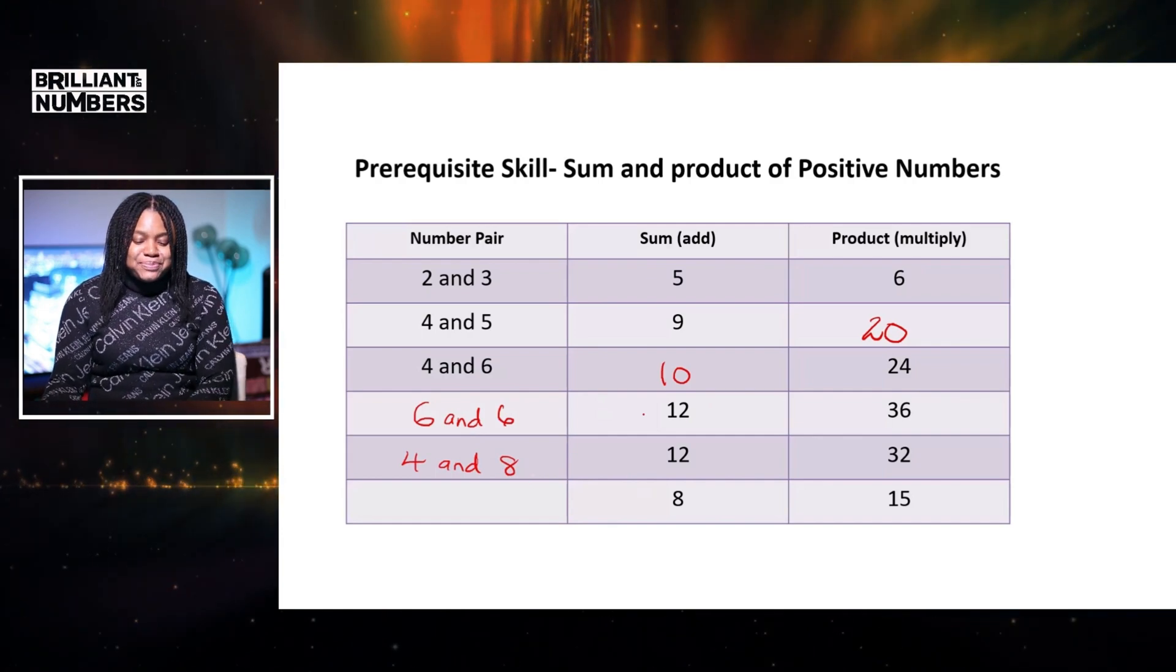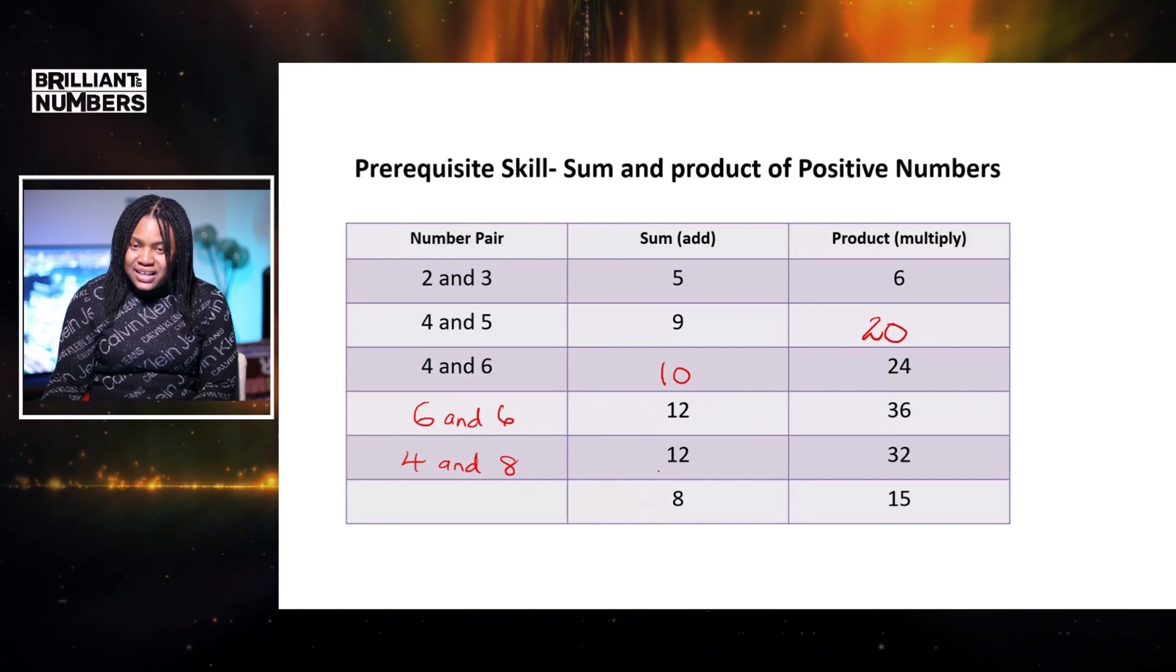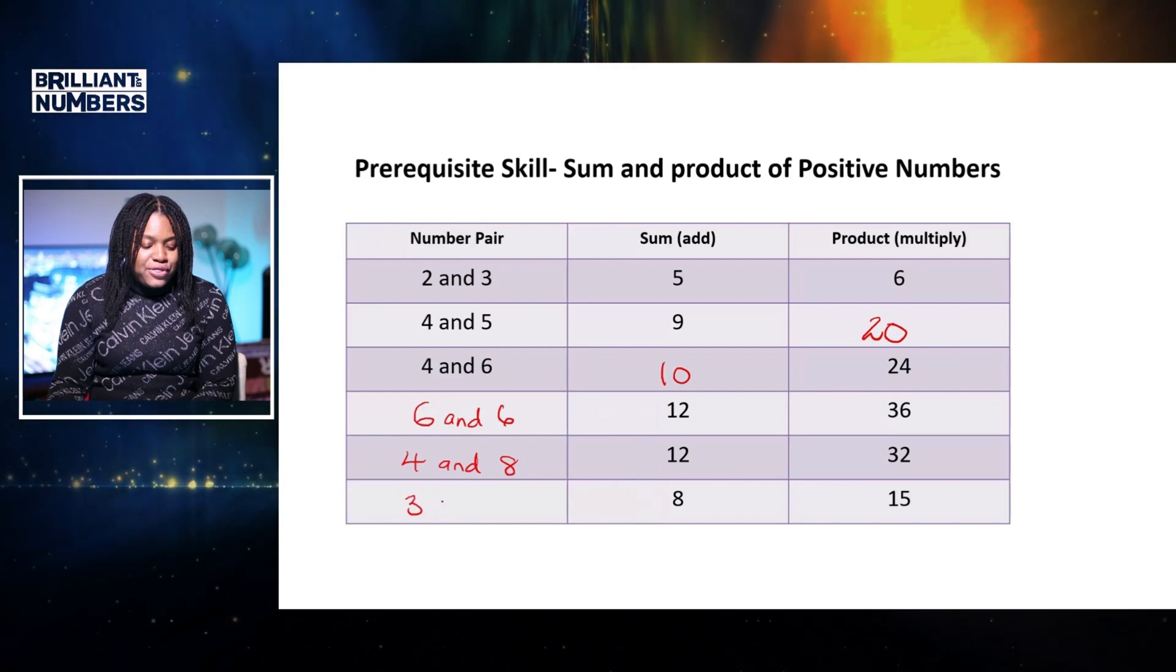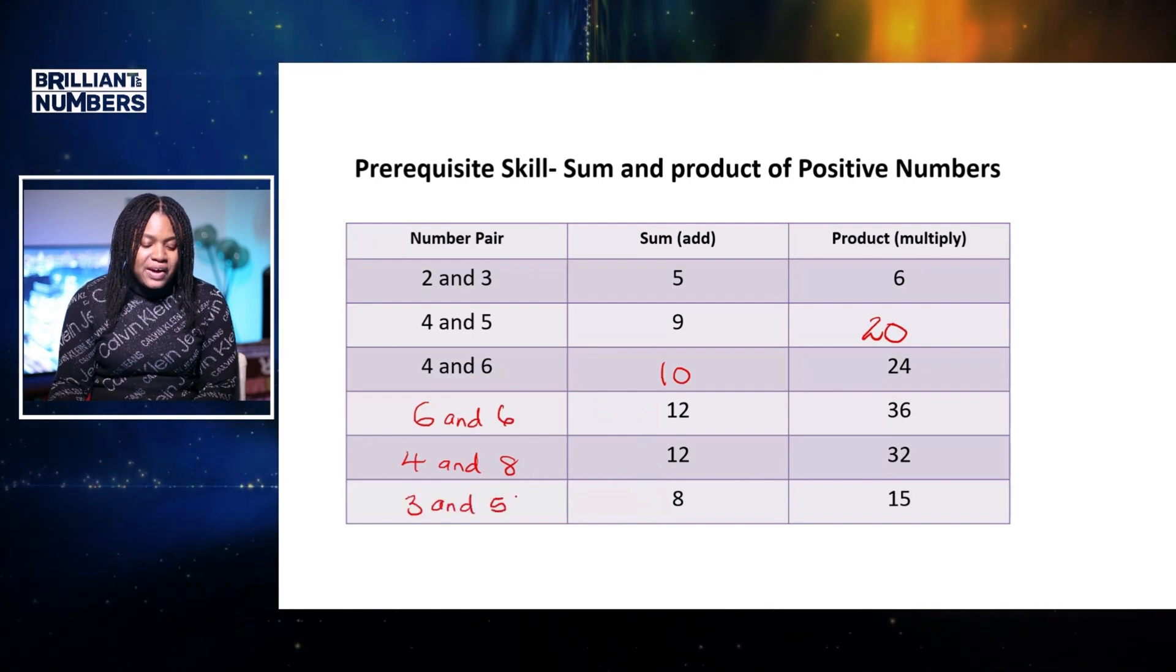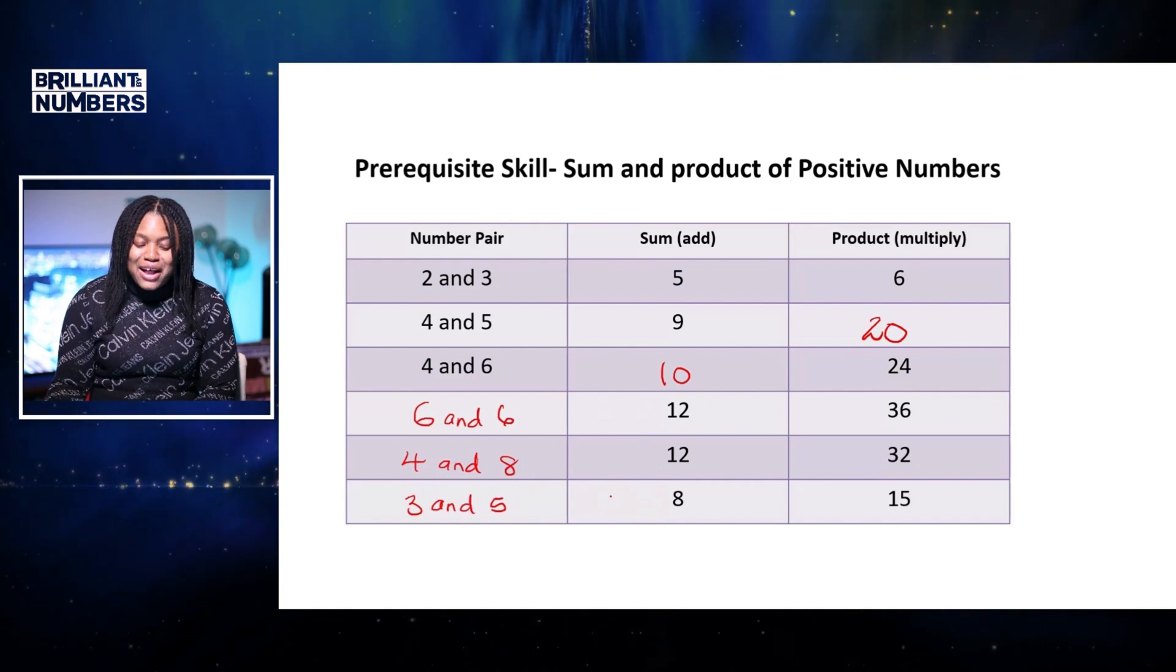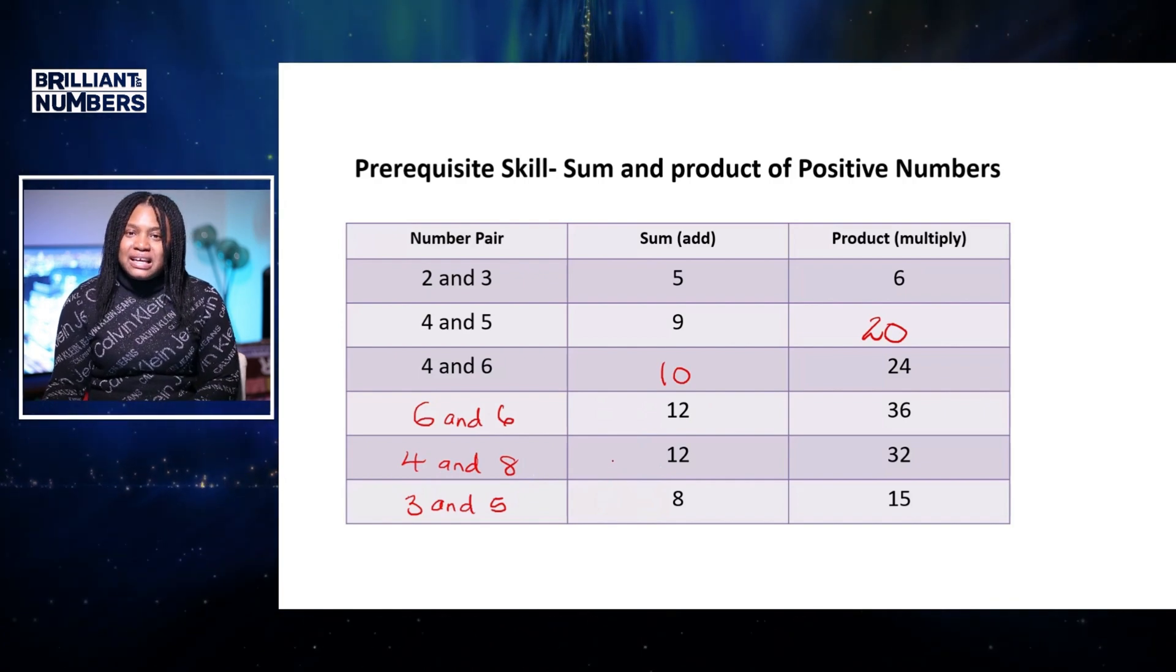And the last one. So we've got a sum of 8 and a product of 15. So the answer is 3 and 5. So 3 plus 5 gives us 8 and 3 multiplied by 5 gives us 15.